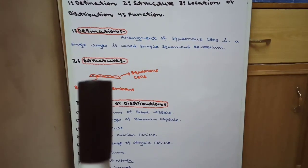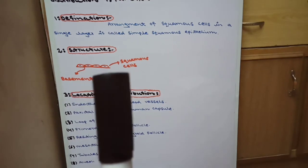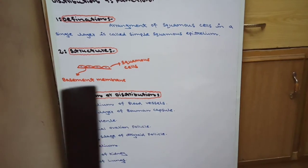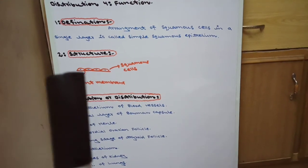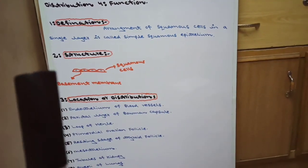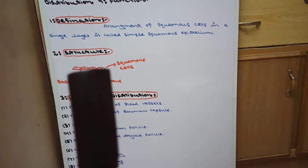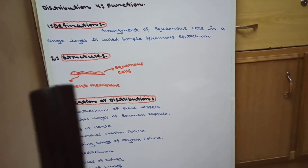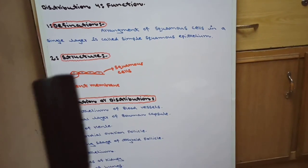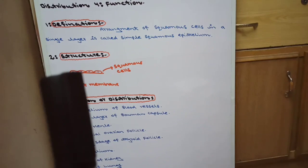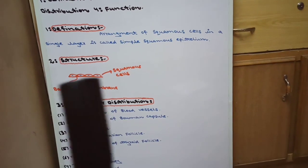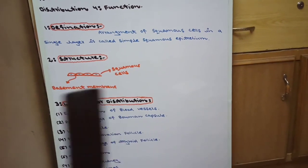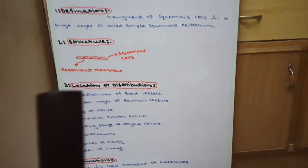Now we come to structure. This is a basic structure of simple squamous epithelium. This is a basement membrane on which the single layer of squamous cells is arranged, with a differing inner cell with a flat, centrally located nucleus.